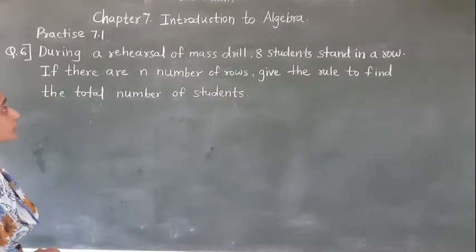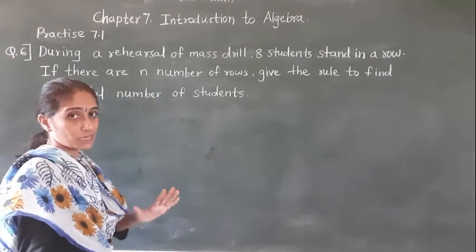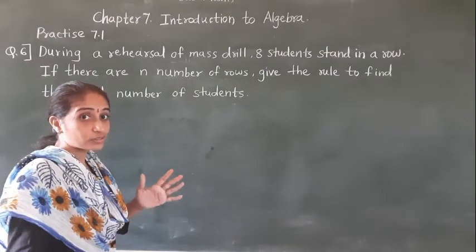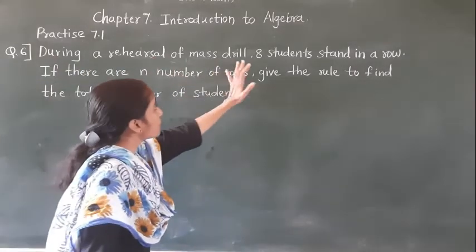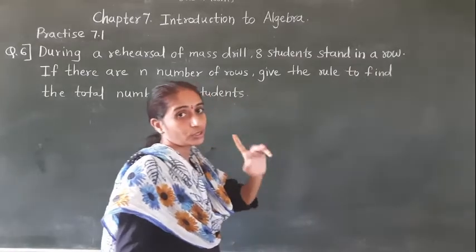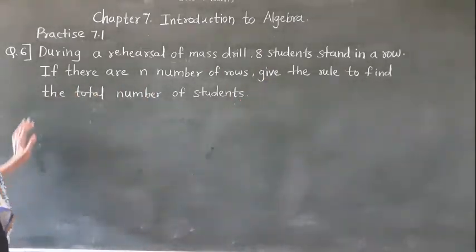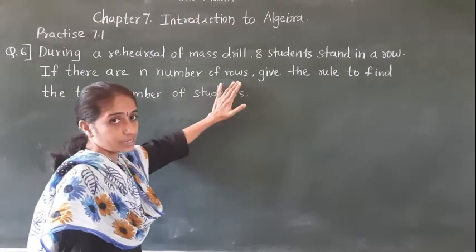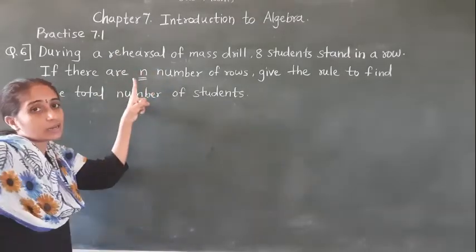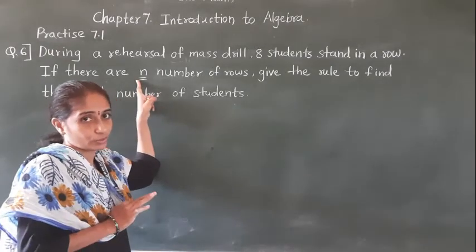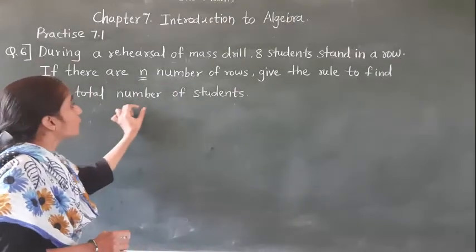Let's solve question number 6. During the rehearsal of mass PT, 8 students stand in a row. In one row, 8 students stand. If there are n number of rows — n is the variable used here, which means it does not have a fixed value — we don't know how many rows there are. Give the rule to find the total number of students.